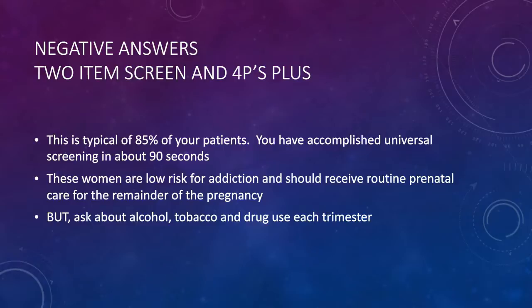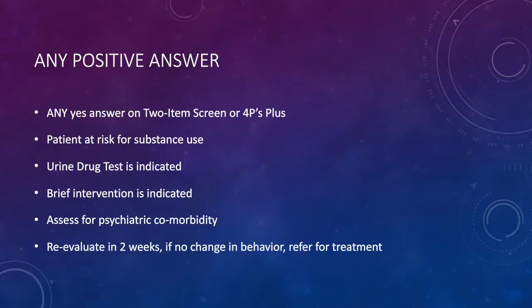If you get any positive answer on either the two-item screen or the 4Ps Plus screen, the patient is at risk for substance use. A urine drug test is indicated, a brief intervention is indicated, and you want to assess for psychiatric comorbidity and reevaluate in two weeks. If there's no change in behavior, consider referring them for treatment.